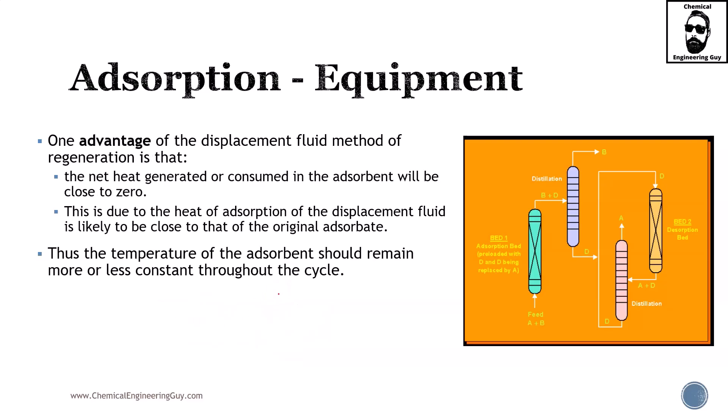One of the main advantages of the displacement fluid method is that the net heat generated or consumed in the adsorbent will be typically zero. This is essentially due to the heat of adsorption of the displacement fluid likely to be similar than the reverse. So essentially the plus and negative signs are similar in magnitude, so the net heat is zero. Thus the temperature of the adsorbent should remain more or less constant. So that's also a good advantage.